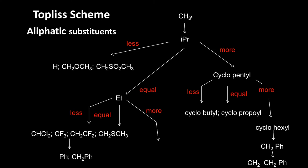This is how the Topliss scheme works. It is ideal if you have a very complex, slow, and time-consuming synthetic protocol. Whereas if the synthesis is very fast, you would look at the Craig approach and synthesize a large number of substituent molecules and then test their activity.